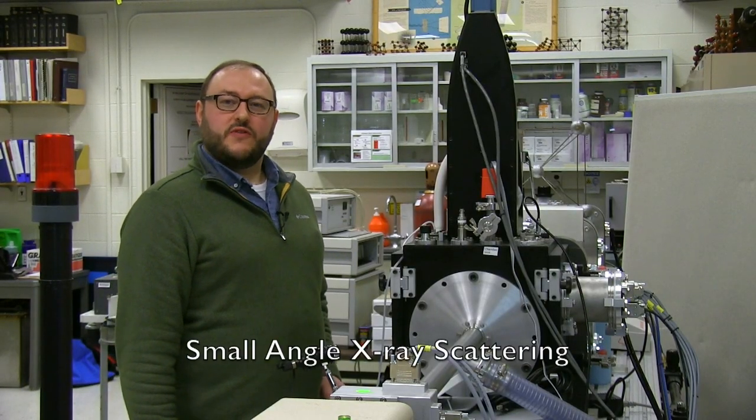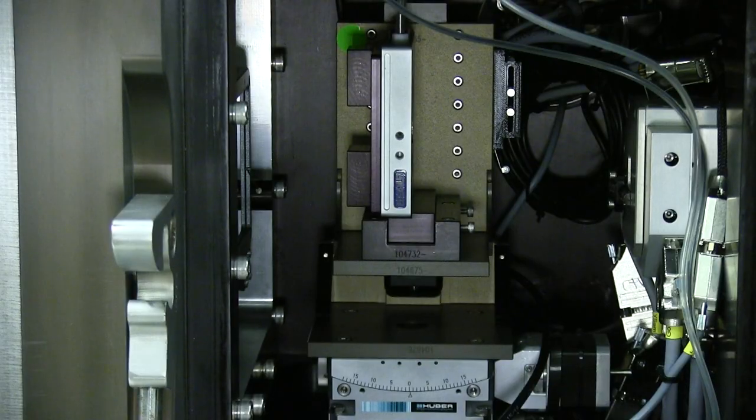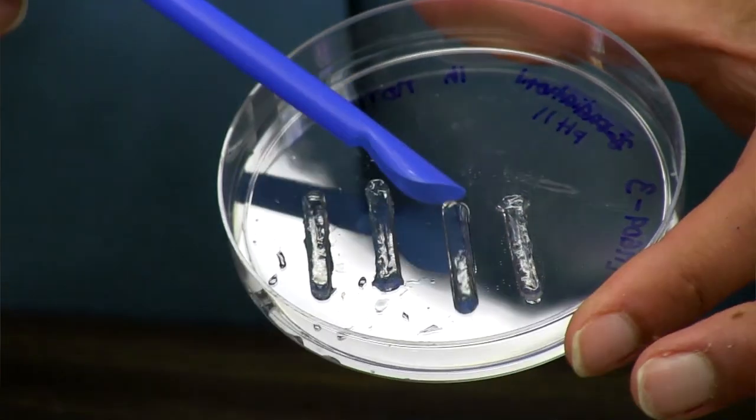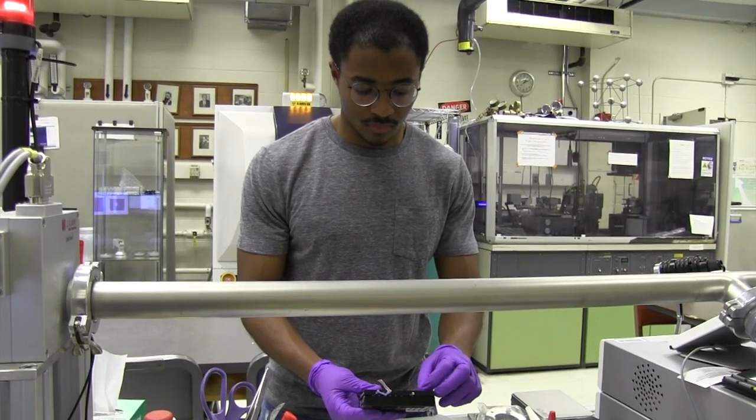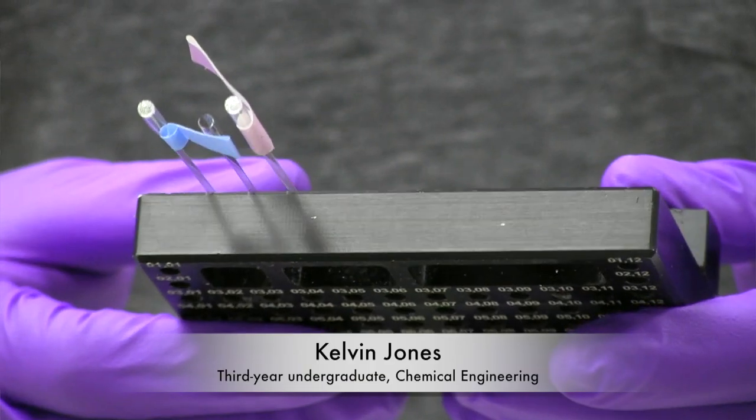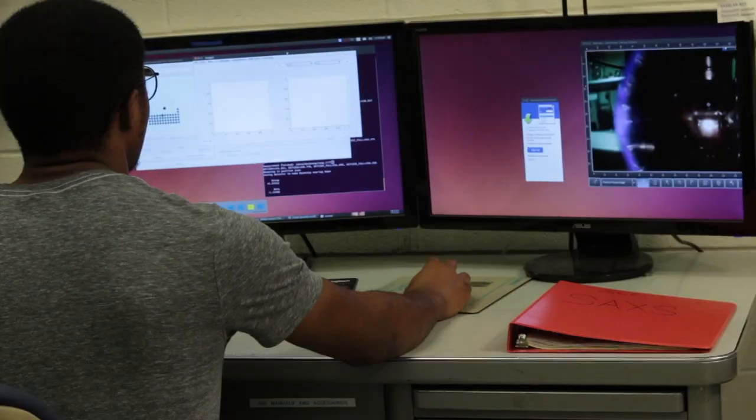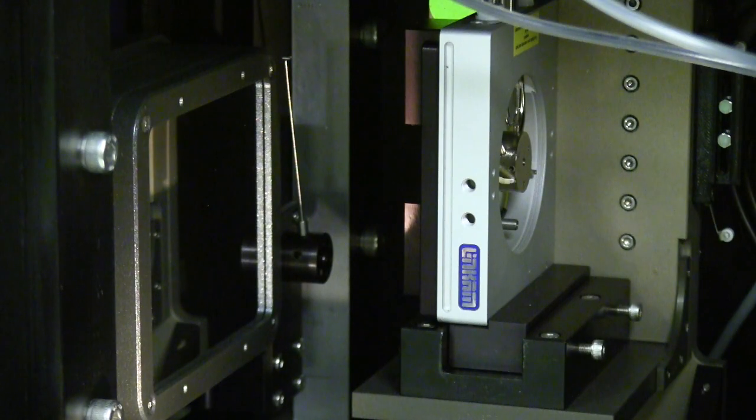Whereas most of the equipment in the facility is targeting hard materials, small angle X-ray scattering equipment characterizes soft materials. You can learn about the structure of a material not on the angstrom scale, but on the hundreds of nanometers scale. The beam stop that looks like a clock hand rotates into position in order to block the main X-ray beam and allows us to see the scattering very close to the main beam.